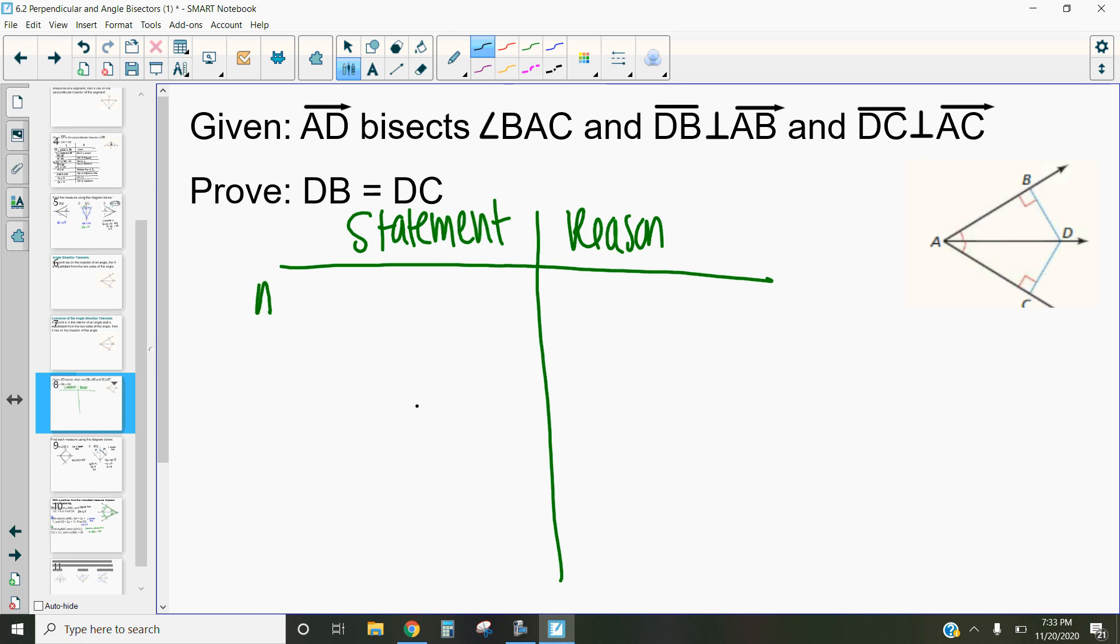So in this case what we're given is that ray AD bisects angle BAC. And we've also been given this idea that, or let's just start there, let's start with that. Now what does that even mean? AD bisects angle BAC.